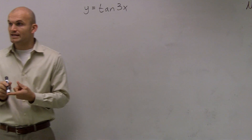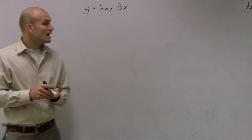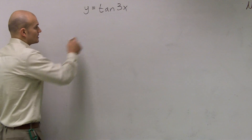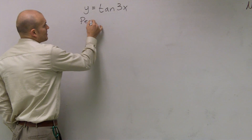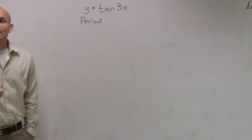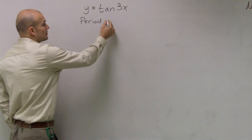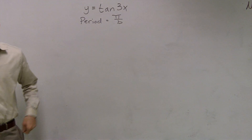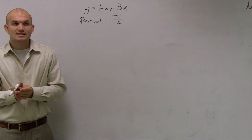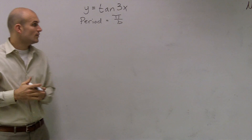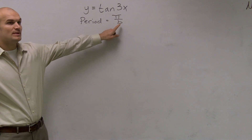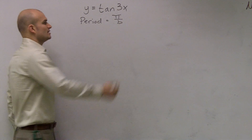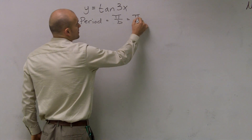What we're going to be concerned with is our period and the endpoints of our graph. The new thing to remember is that the period, rather than being 2π over b, is now going to be π over b. So b is always going to be the number in front of your x — in this case, the period is π over 3.